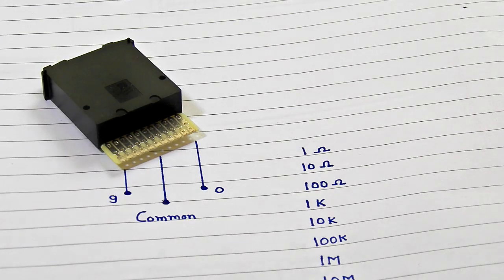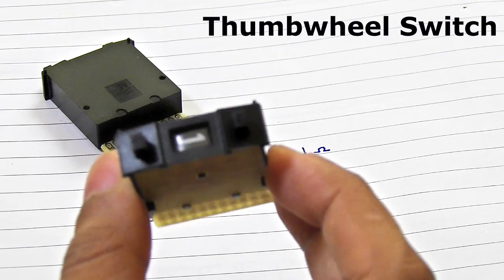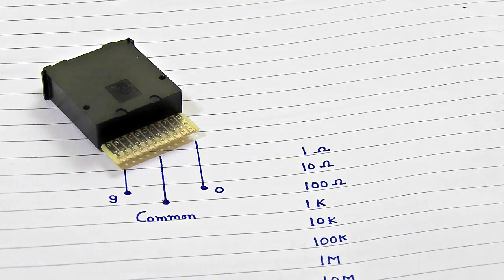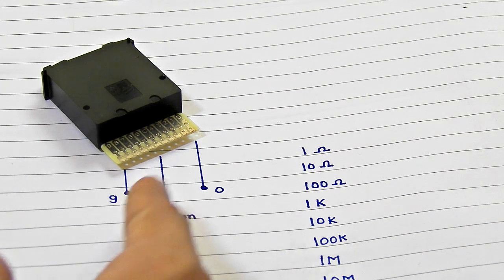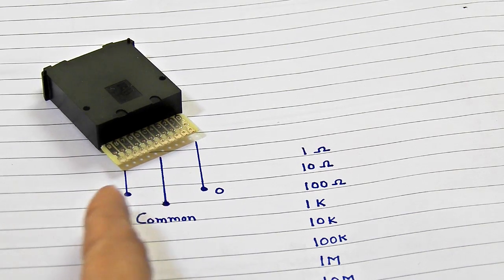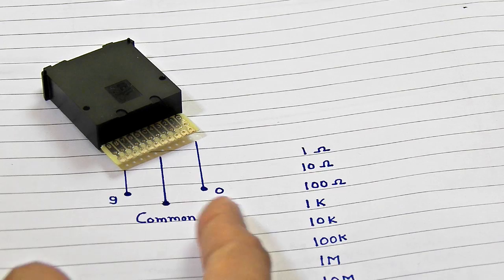To make your decade resistance box you will need this thumb wheel switch. You can find these things on eBay. So let's take a look at how thumb wheel switches work. Thumb wheel switches have 10 terminals. The middle one is a common terminal, and on the left side it is nine, and to the right it is zero terminal.